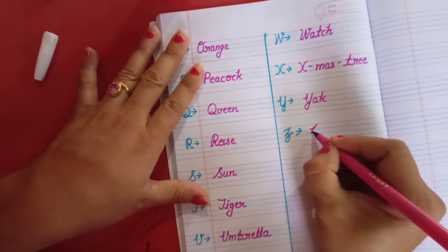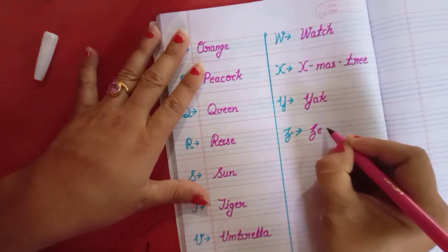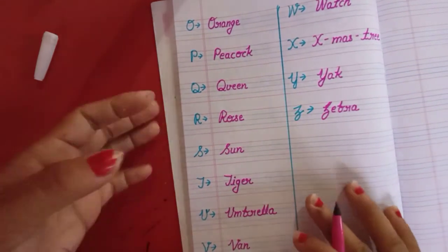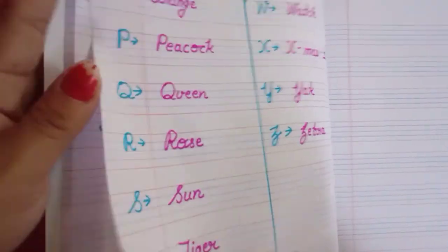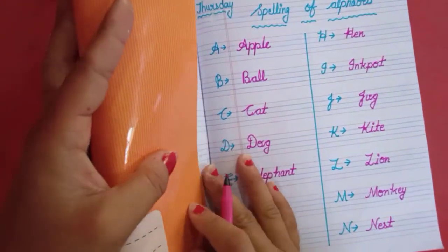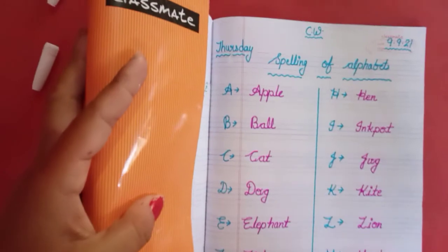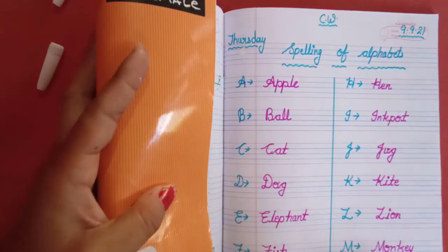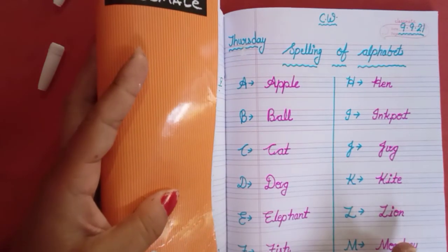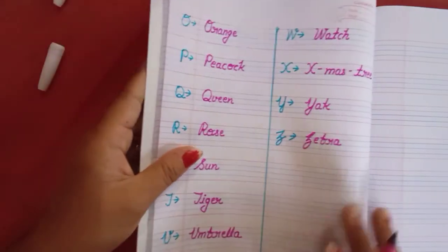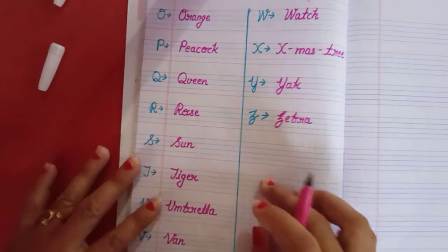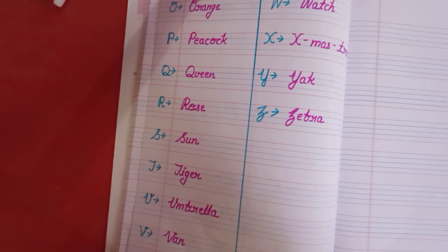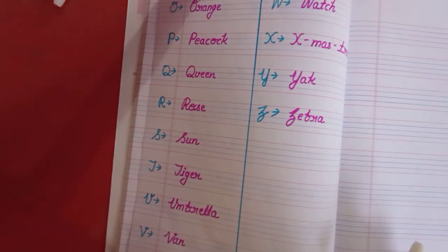Y for yak. Y A K yak. Z for zebra. Z E B R A zebra. Got it children. So UKG class you have to do this in your English notebook. Spelling of alphabets. A to Z and you have to learn it also. So that's enough for today children. Thank you so much. Do this work in your English notebook and do your work neat and clean. Thank you class.